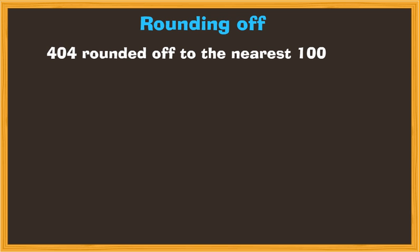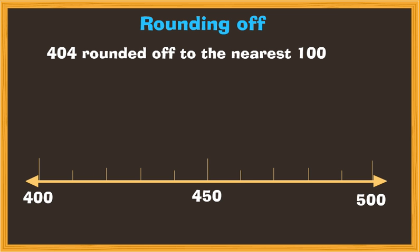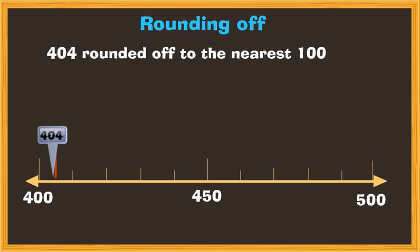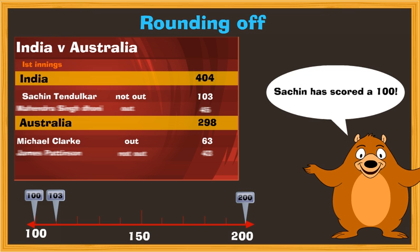Similarly, India's score of 404 can be rounded off to the nearest hundred too. Draw a number line from 400 to 500 and mark where 404 lies on the number line. 404 is clearly nearer to 400 than 500. Thus, we round off 404 as 400. Now you know why Balu said that Satchin scored 100 even though he scored 103.